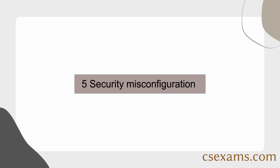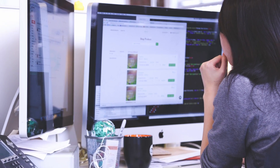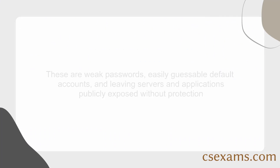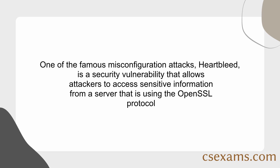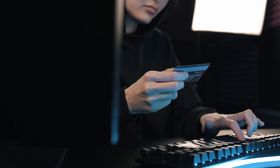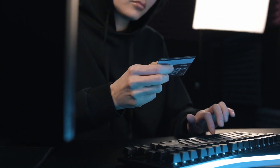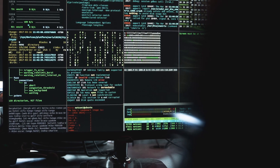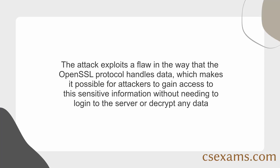Number 5: Security misconfiguration. These include weak passwords, easily guessable default accounts, and leaving servers and applications publicly exposed without protection. One famous misconfiguration attack is Heartbleed — a security vulnerability that allows attackers to access sensitive information, including user passwords and credit card numbers, from a server using the OpenSSL protocol. The attack exploits a flaw in how OpenSSL handles data, allowing access to sensitive information without needing to log in or decrypt any data.